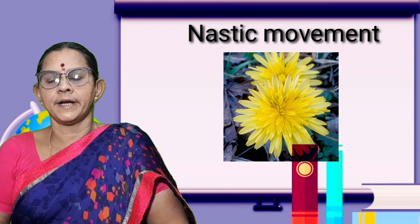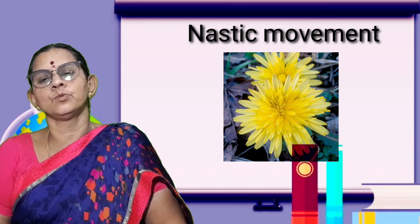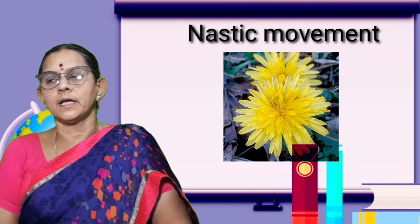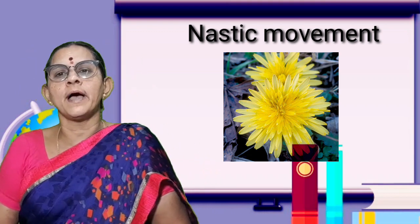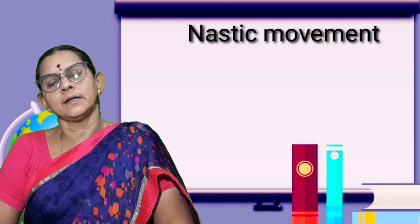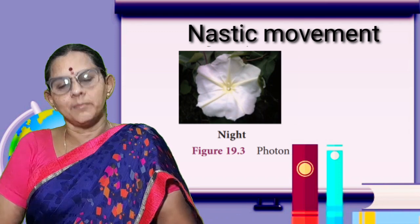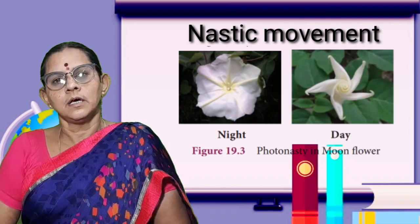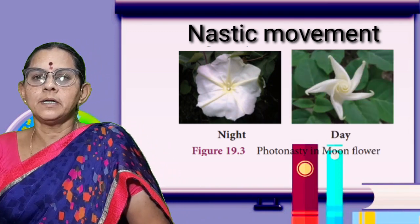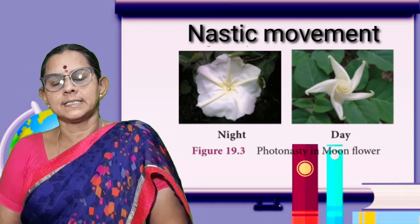Photonasty is the movement of a plant in response to light. For example, the moon plant, Ipomoea alba — it blooms at night and closes against sunlight. That is why it is a good example of photonasty.